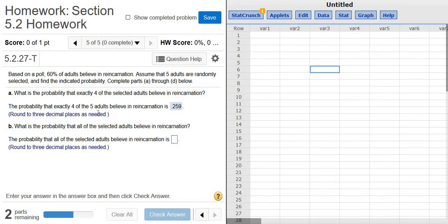Based on a poll, 60% of adults believe in reincarnation. Assume that 5 adults are randomly selected and find the indicated probability. This problem is binomial because we have 2 possible outcomes: either an adult believes in reincarnation or they don't believe in reincarnation.